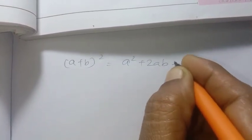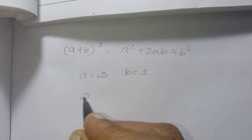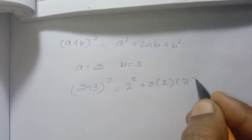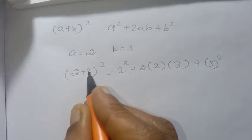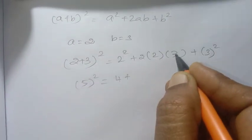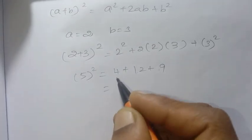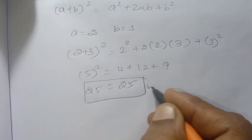For example, a plus b the whole square equals a squared plus 2ab plus b squared. Let a equal 2 and b equal 3. Then a plus b the whole square equals 2 plus 3, which is 5, and 5 squared is 25. On the right side: 2 squared is 4, plus 2 into 2 into 3 which is 12, plus 3 squared which is 9. So 4 plus 12 plus 9 equals 25. Both sides equal 25, confirming the identity.